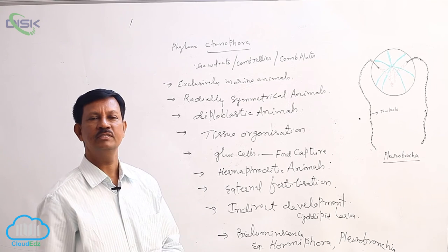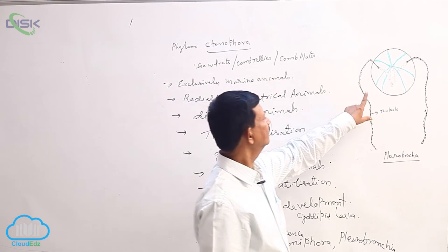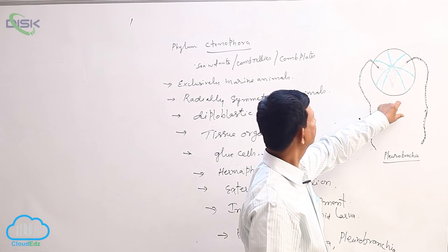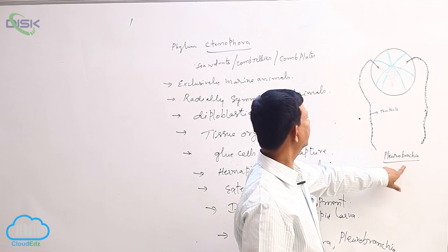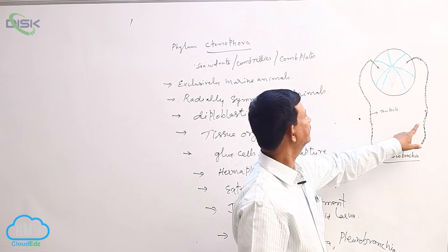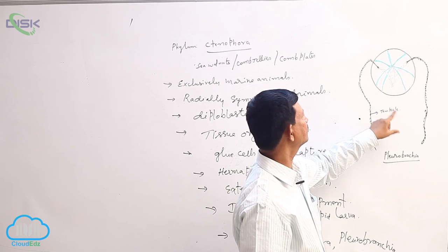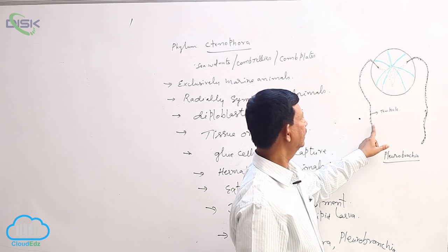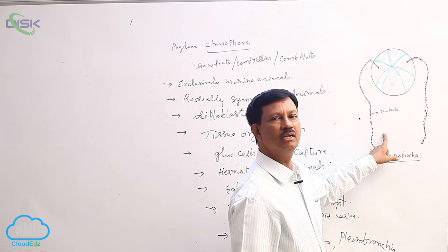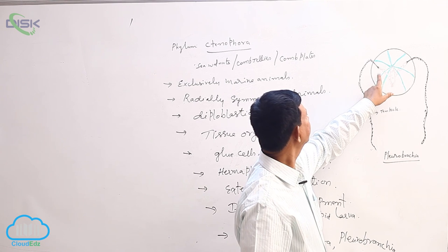Examples are Pleurobrachia and Mnemiopsis. Here is the diagram of Pleurobrachia — tentacles are also present. Long tentacles are present, and they have small comb plates which help in locomotion.